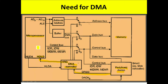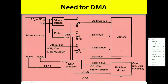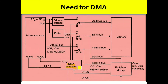After completing the current bus cycle, the microprocessor sends one signal to the DMA controller — that signal is the hold acknowledgement. When the DMA controller receives the hold acknowledgement, it means the processor has released the system bus. Now the system bus is under the control of the DMA controller. After taking control of the system bus, it sends a DMA acknowledgement signal to the peripheral device, and the peripheral device will access the memory directly through the data bus.